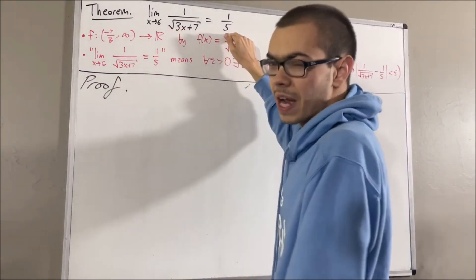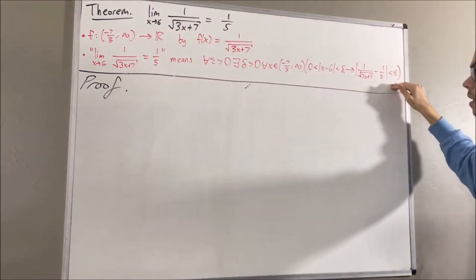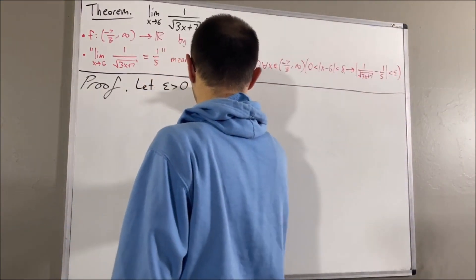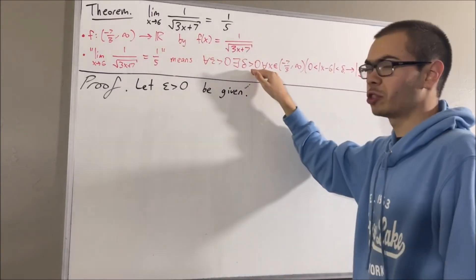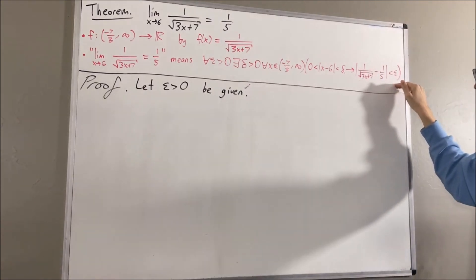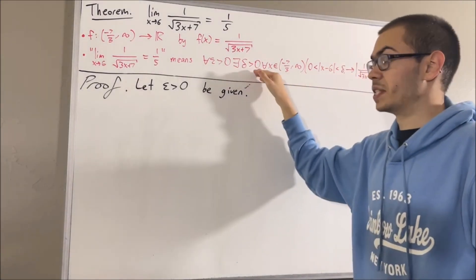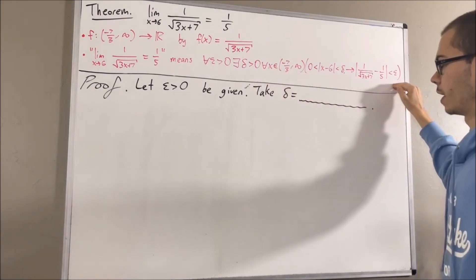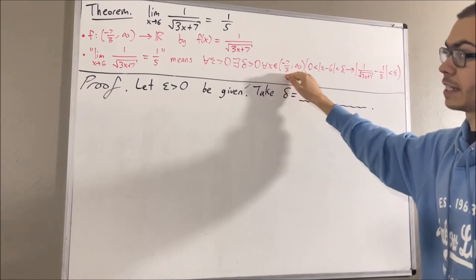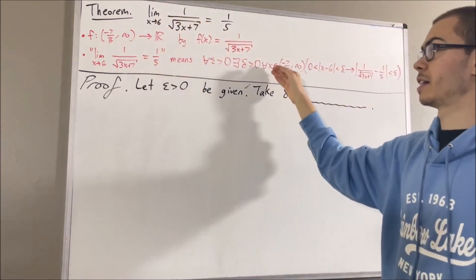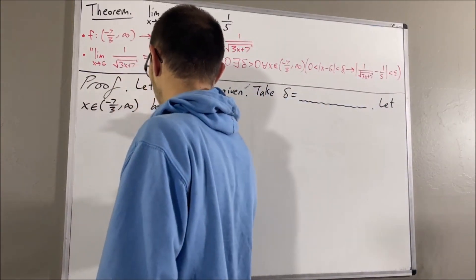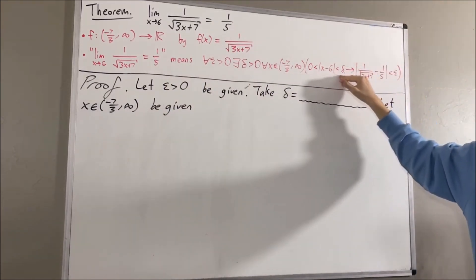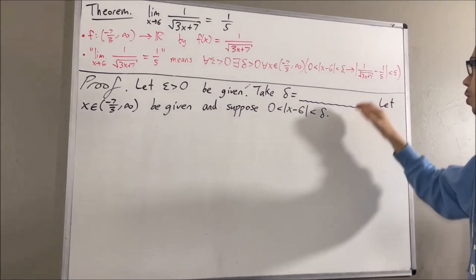Now to prove this limit, all we have to do is prove this statement. Since we're trying to prove a statement about every epsilon greater than 0, let's give ourselves an arbitrary epsilon greater than 0. From here, we want to find a delta greater than 0 such that this statement is true. Let's pretend as though we've already figured out what to choose delta to be. We would want to show that this statement is true, so let's give ourselves an arbitrary x in the domain of our function, suppose the hypothesis is true, and now we want to prove the conclusion.